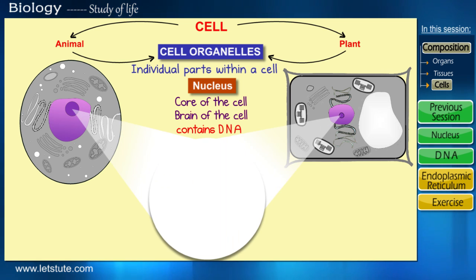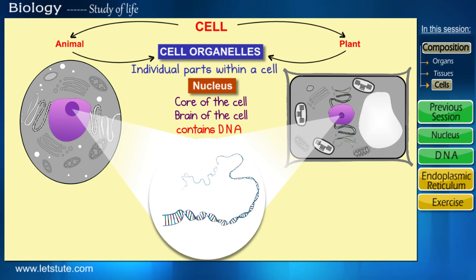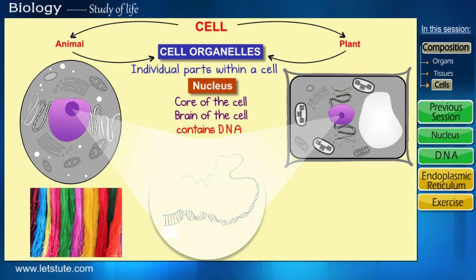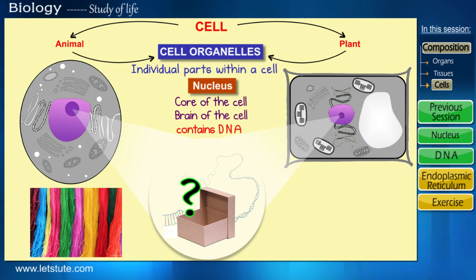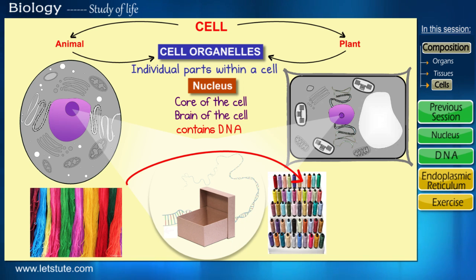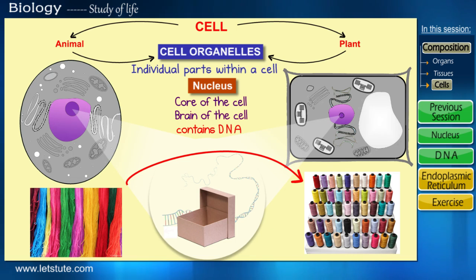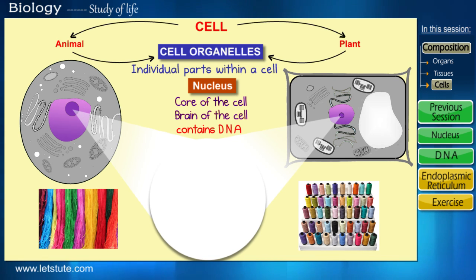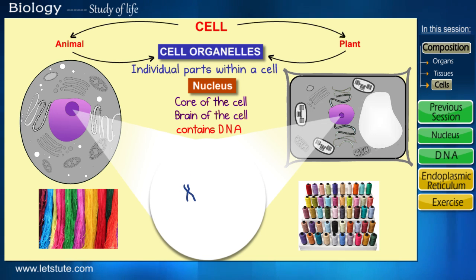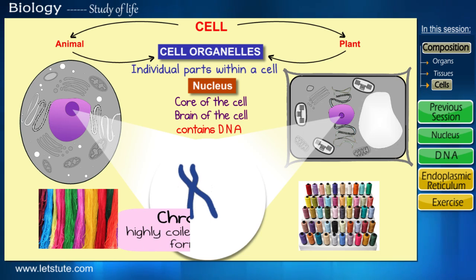DNA is in the form of very long strands in the nucleus of each cell. Consider an example: if we have to try fitting all these long cotton threads into a small box, we would have to wind and spin them together and make them into a roll. Similarly, to fit the long strands of DNA, it has to be highly coiled and compressed. After all the coiling, it forms a rod-shaped structure which we call a chromosome.